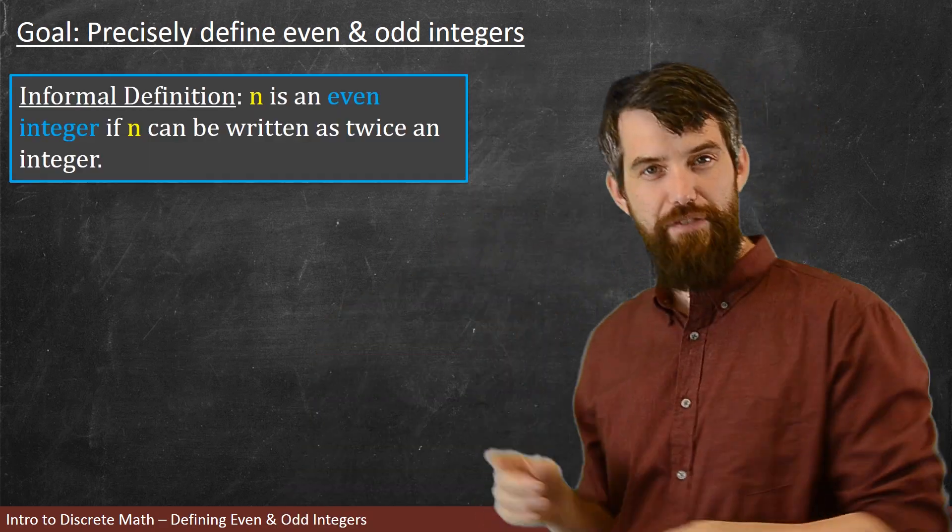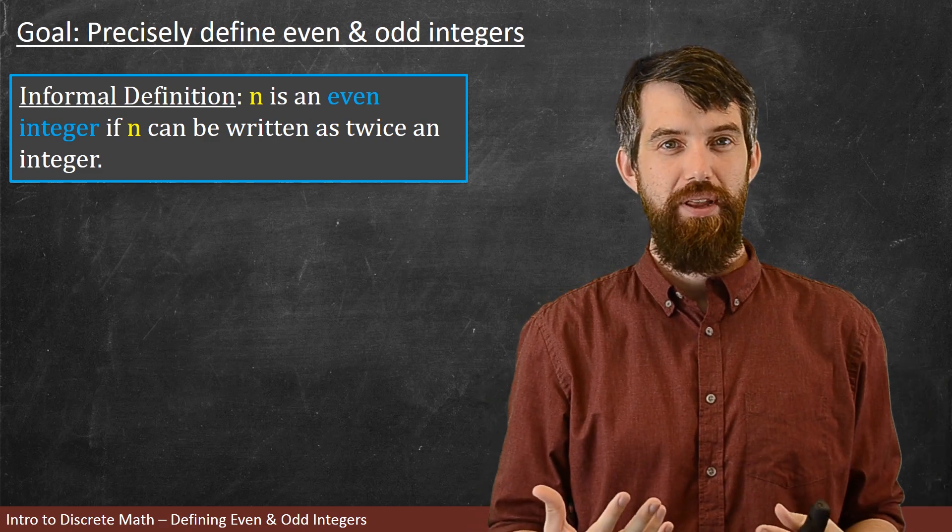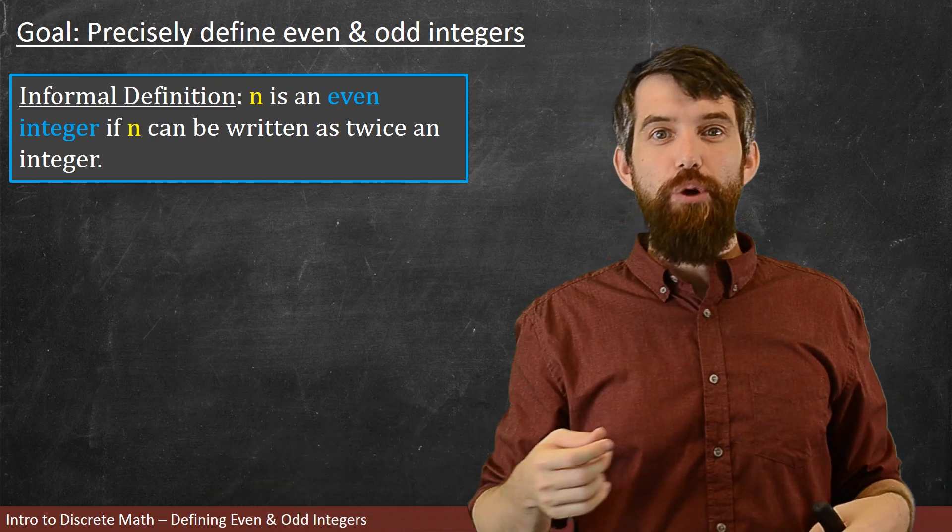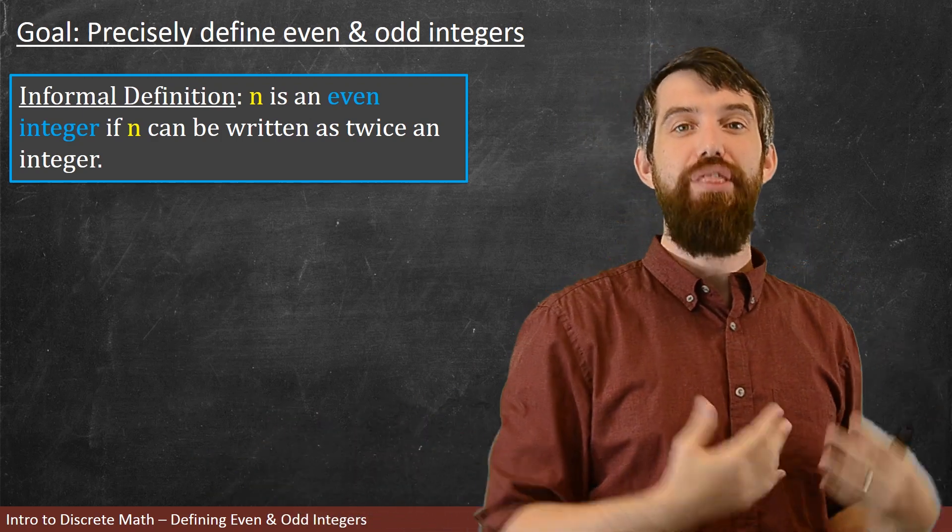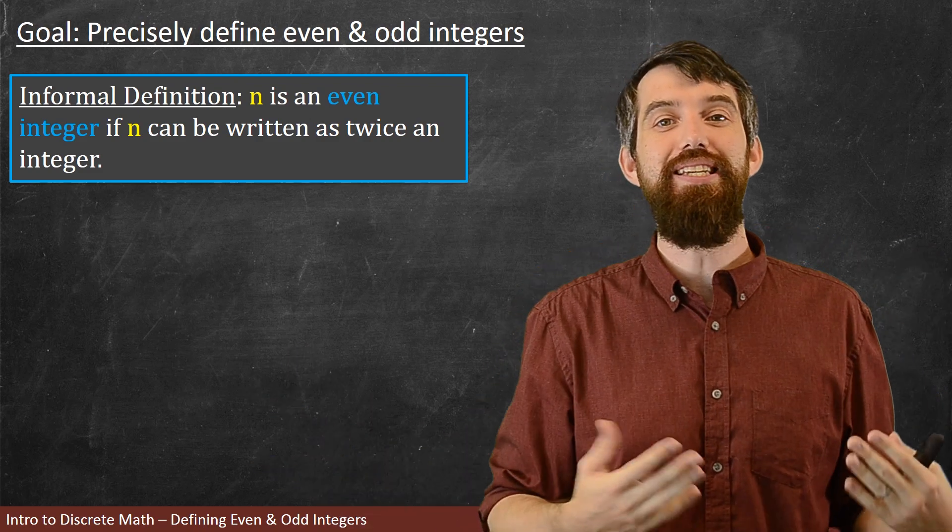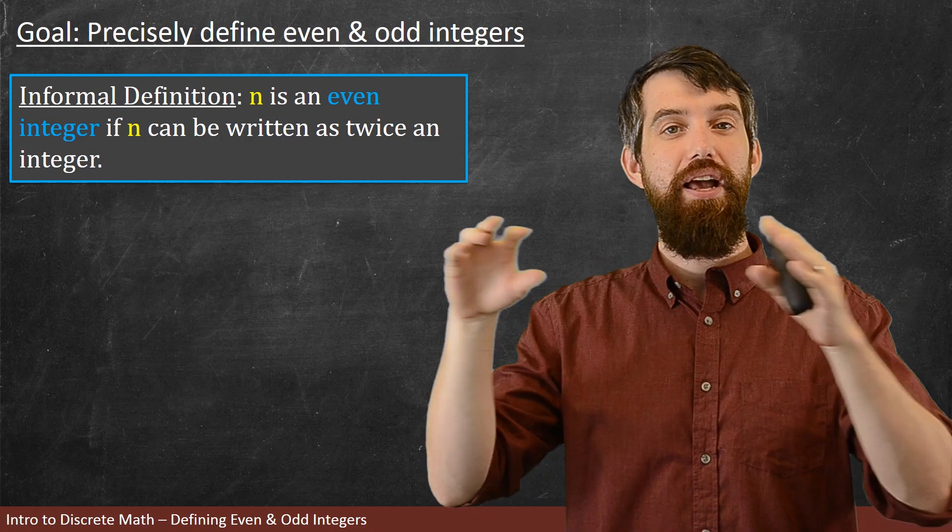When I look at this informal definition, there's a sort of existential nature to it. When we say that an integer, say n, can be written as twice something, really what we're saying is that there exists, this existential claim, there exists some other integer k where the n can be written as twice it.